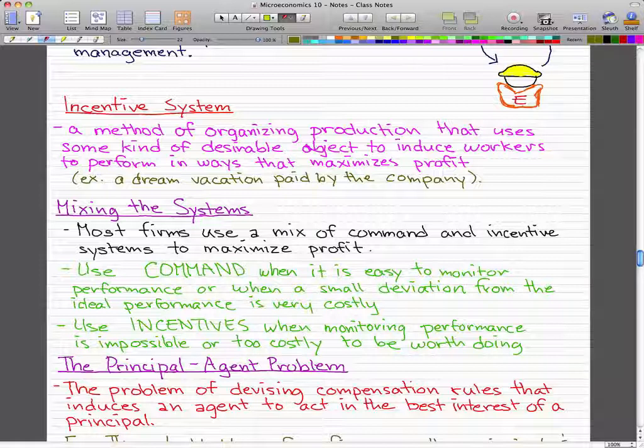They use command when it is easy to monitor performance or when a small deviation from the ideal performance is very costly. So probably yeah McDonald's examples, if there are no supervisors or managers who knows what will happen. Now they use incentives whenever monitoring performance is impossible or too costly to be worth doing.